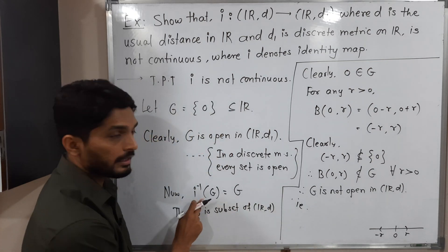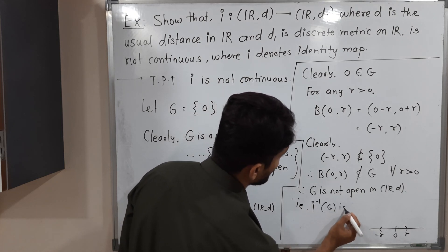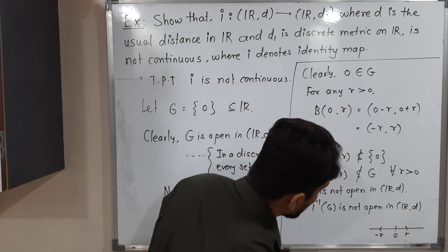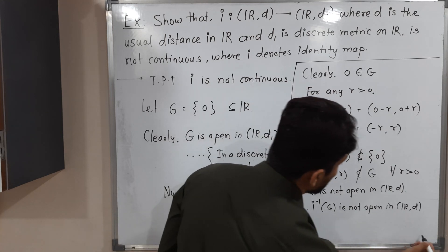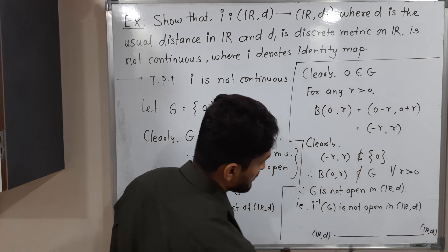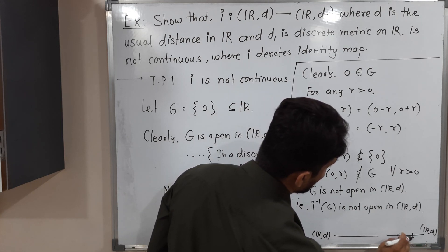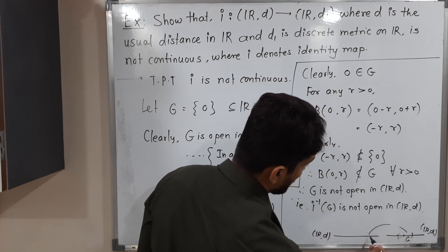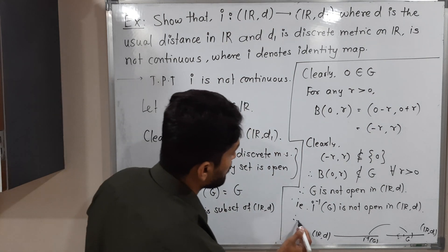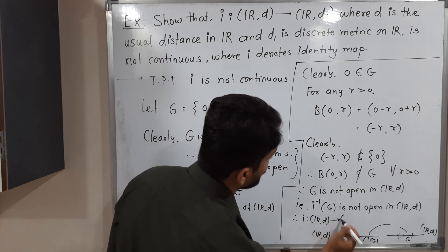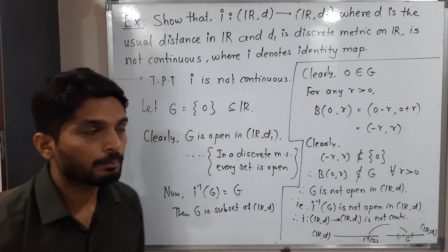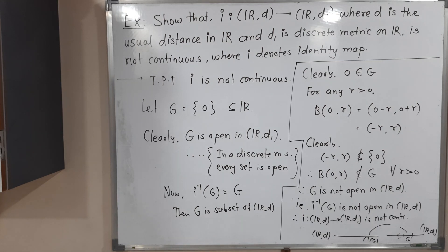Since I⁻¹(G) is not open in Rd, we have found an open set G in the codomain Rd1 (with discrete metric) whose inverse image is not open in the domain Rd (with usual distance). Therefore, I defined from Rd to Rd1 is not continuous. That's how we prove the identity function I is not continuous.